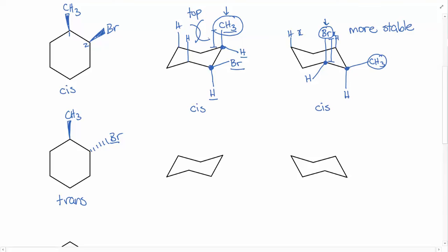Now for what trans looks like on cyclohexane in a chair conformation. Let's pick a carbon as number one and draw the two possible orientations — straight up and off to the side. We want the CH3 closer to the top of the ring, so it goes up in the axial position. Carbon number two is next over, with its two possible orientations. Br has to be closer to the bottom of the ring, so the hydrogen goes to the top and the Br goes to the bottom. You'll notice that both substituents are in the axial positions. This is trans because on carbon one the non-hydrogen substituent (CH3) is closer to the top, while on carbon two the non-hydrogen substituent (Br) is closer to the bottom.